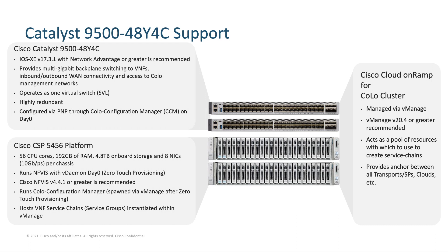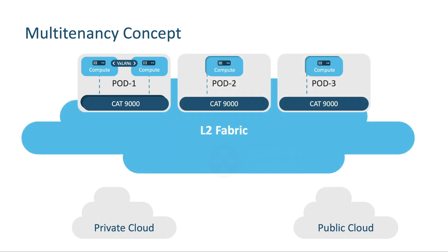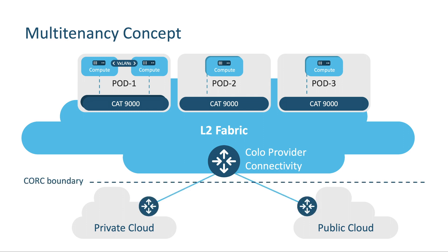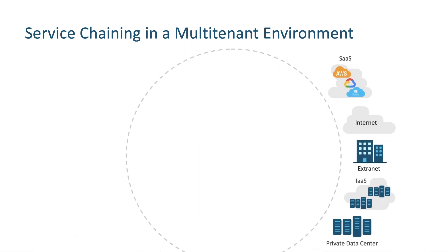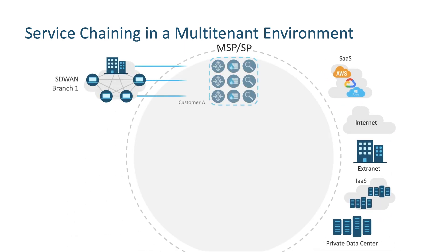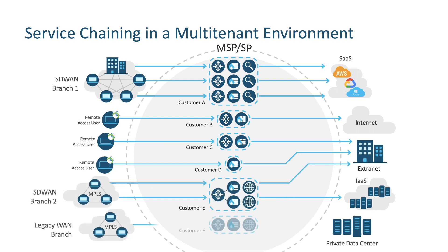For our larger customers, and in particular managed service providers who wish to offer Cloud OnRamp for Colocation as a service to their customers, we now also support multi-tenancy and service chain cloning. With multi-tenancy, a single Cloud OnRamp for Colocation physical cluster can be used to virtualize network functions for multiple customers or lines of business. Not only does this ensure that customer service chains and the data they transmit remain segregated, but also, management and monitoring capabilities of these chains can be given to the customer or end-user. In this way, administrators of large-scale enterprises and MSPs can deliver high-speed cloud access with service chaining capability while supporting an as-needed consumption model that is managed by the end-user or customer.